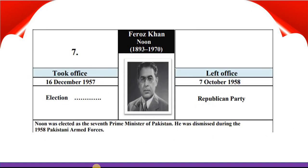Feroz Khan Noon took office 16th December 1957 and left office 7th October 1958. He was elected by elections and belonged to the Republican Party. Feroz Khan Noon was elected as the 7th Prime Minister of Pakistan. He was dismissed during the 1958 Pakistani armed forces coup.